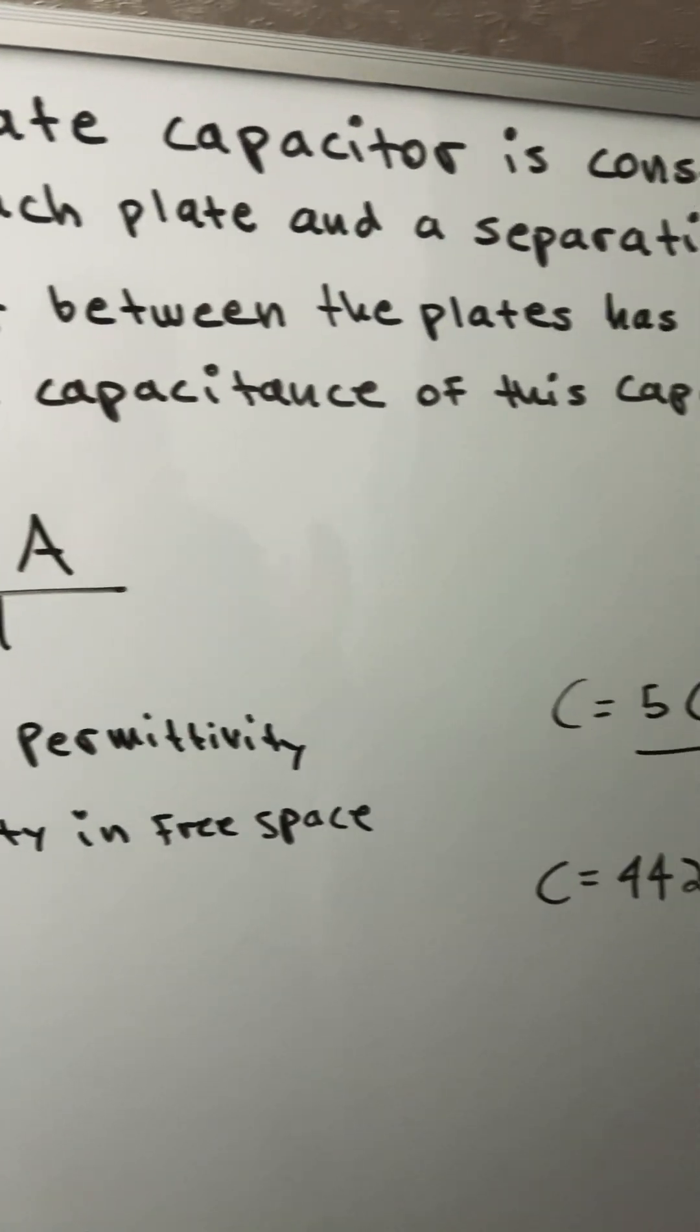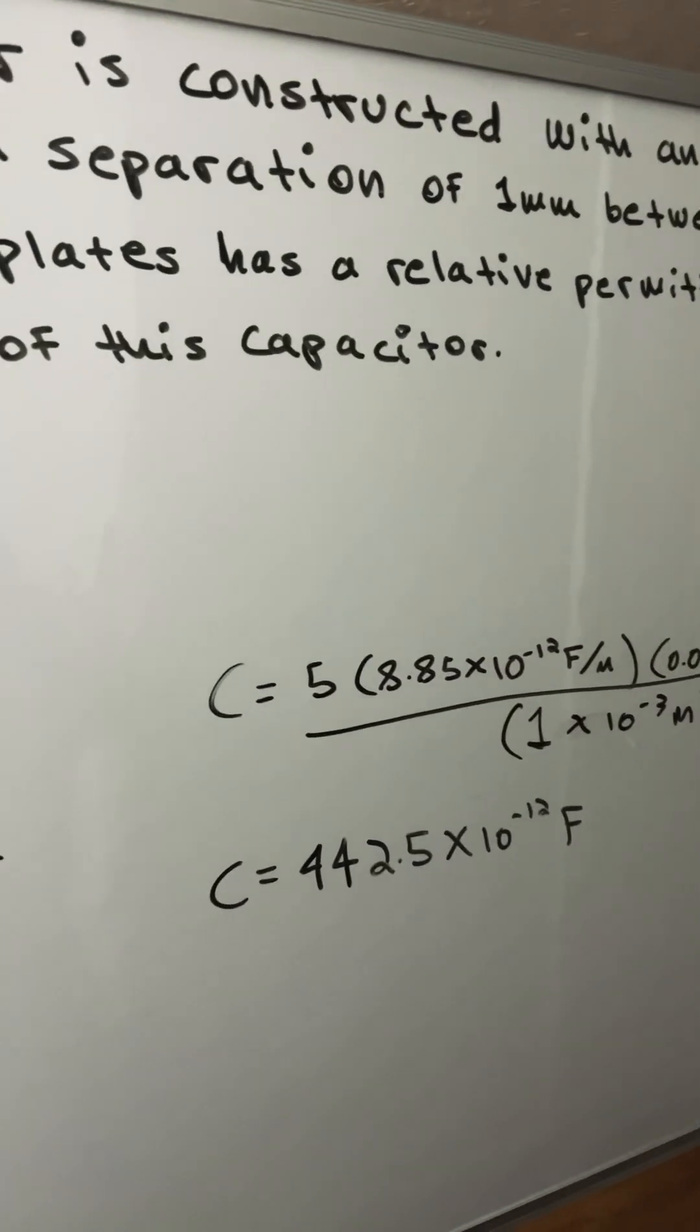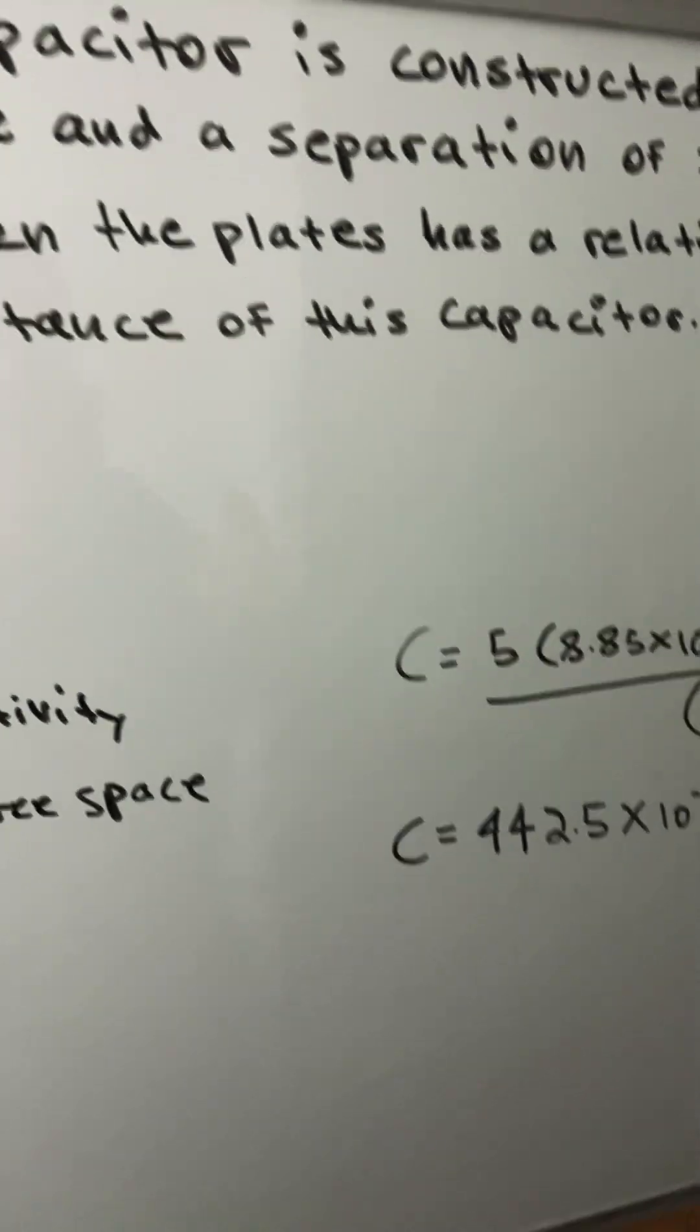The insulator between the plates has a relative permittivity of five. Calculate the capacitance of this capacitor.